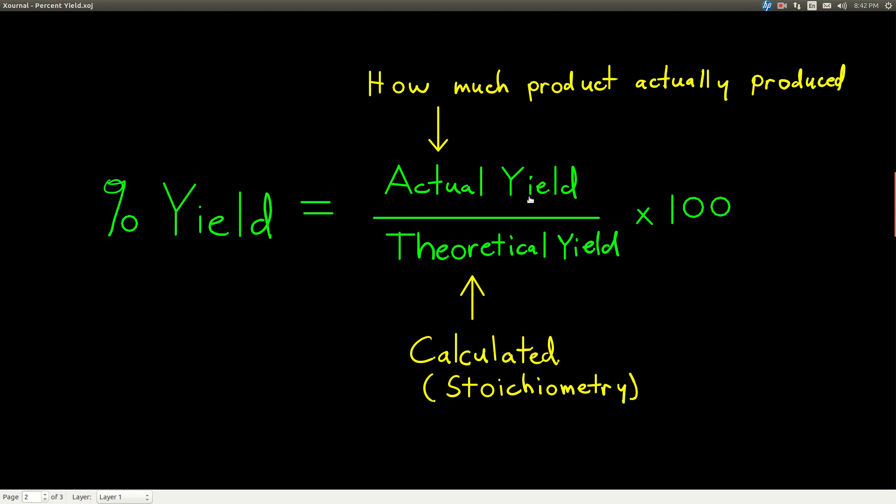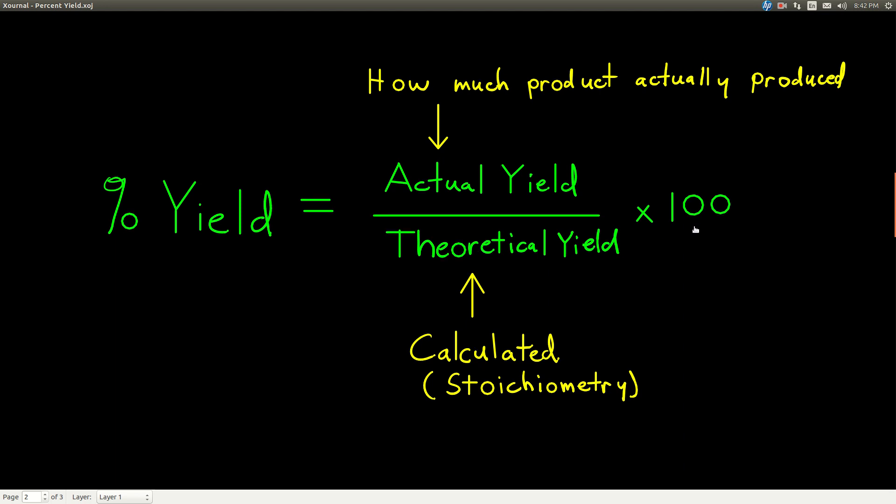So, you weigh it, that's your actual yield. Calculate your theoretical yield, and then you can calculate your percent yield just by dividing the two, multiplying by 100. And again, the 100 is an exact number.